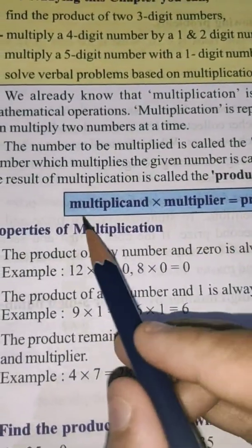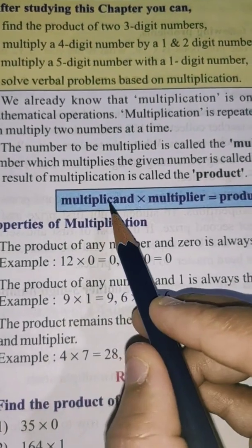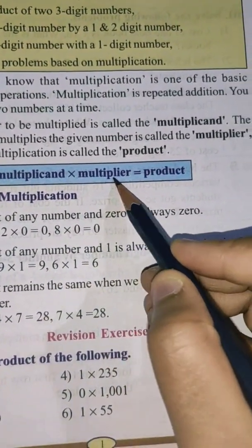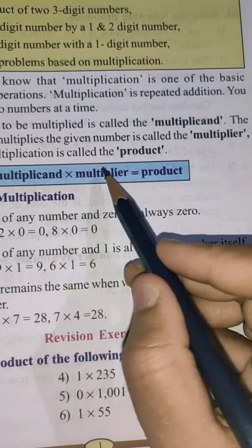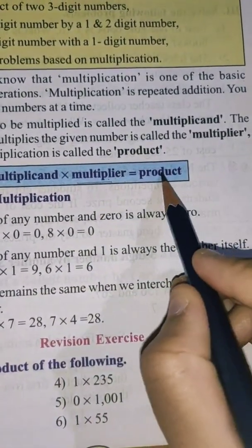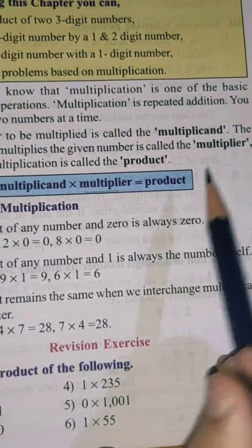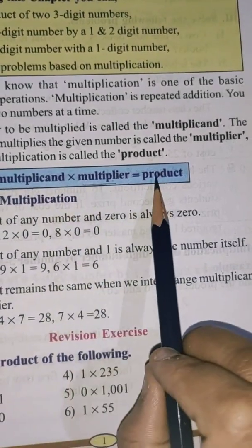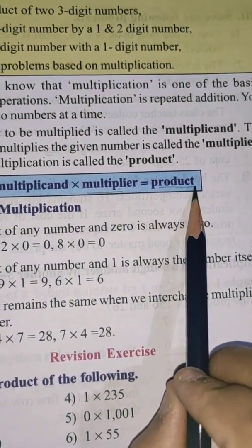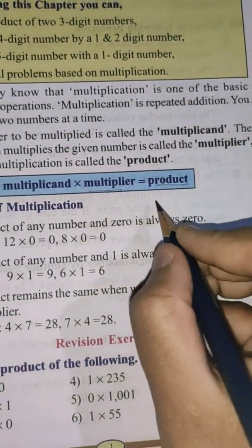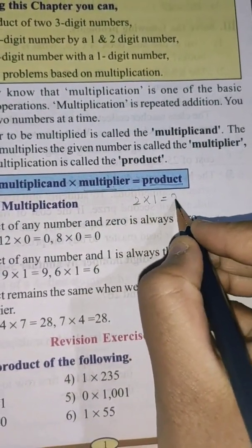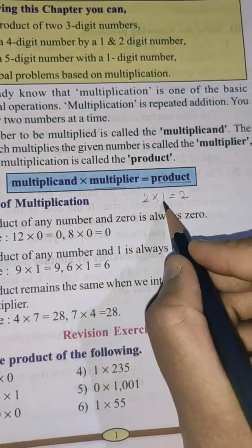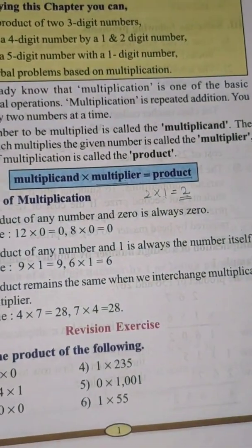The number to be multiplied is called the multiplicand. The number which multiplies the given number is called the multiplier. The product means it is the result — after the multiplication, the result is called the product. For example, 2 into 1 is equal to 2. Here 2 is the multiplicand, 1 is the multiplier, and 2 is the product.